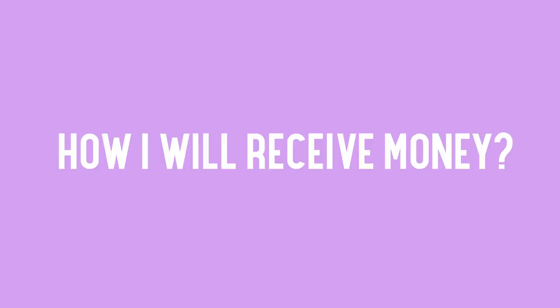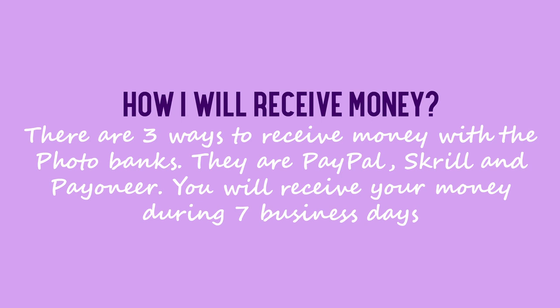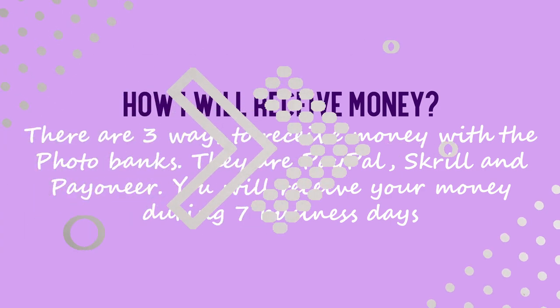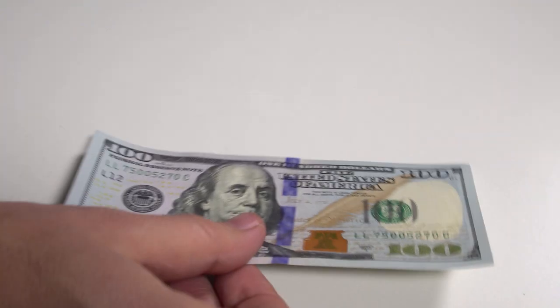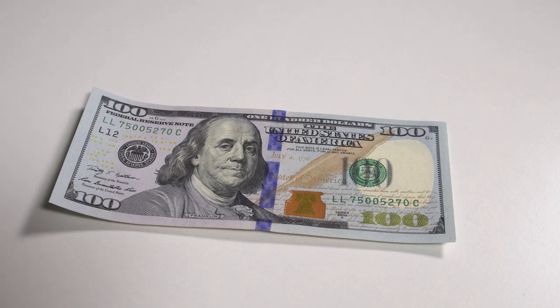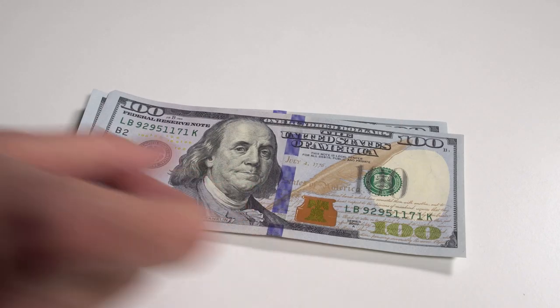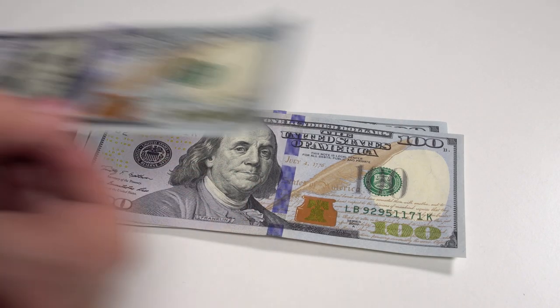How will I receive money? There are three ways to receive money through photobanks: PayPal, Skrill, and Payoneer. You will receive your money within seven business days. That was the common information about photobanks. If you have any questions, feel free to ask me.